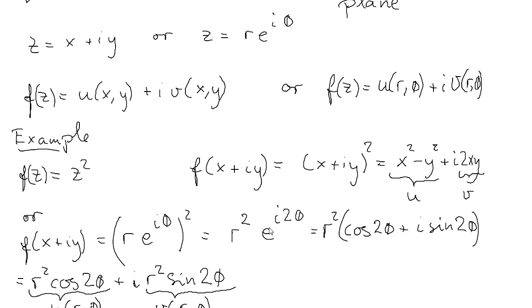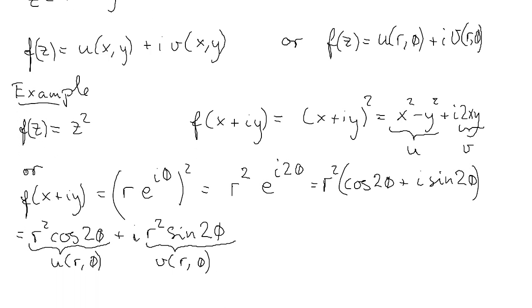If we replace this exponential function by the trigonometric value here, we obtain this expression. When we multiply r squared with this trigonometric function, we obtain this rectangular form. The real part is r squared cosine 2φ, and the imaginary part is this.